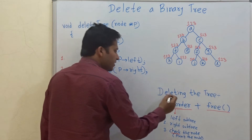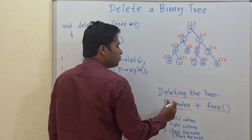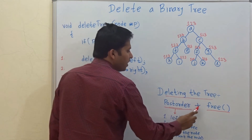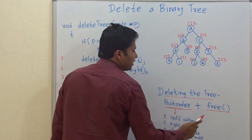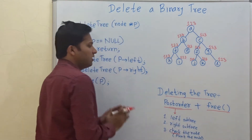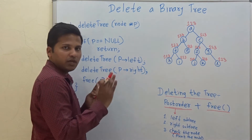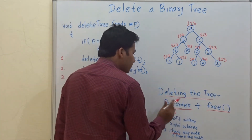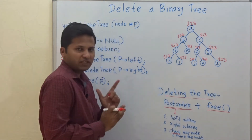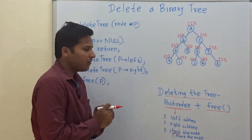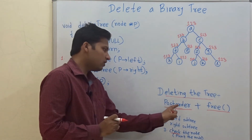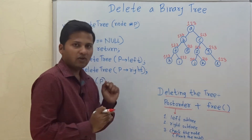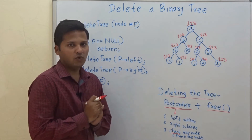For deleting this tree, we are going to use post-order traversal of a tree plus a function free, which deletes the node and makes the memory free. Now what is post-order traversal? In my previous video, I have explained the post-order traversal in detail. I have mentioned the link of the video in the description below.